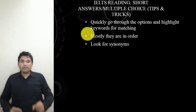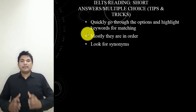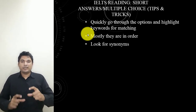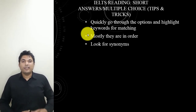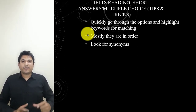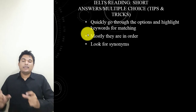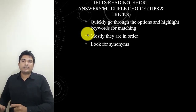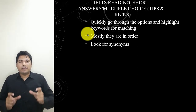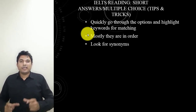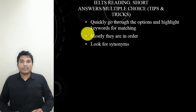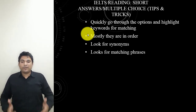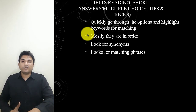The next tip is that you should look for synonyms. If you see words or phrases in the options and you do not find the exact words in the paragraph, look for synonyms. Understand the options and check the same information provided in the option, then match it to the passage. If you find the exact words, that's fine, but if not, match for synonyms. Even if you find exact words, also look for matching phrases.